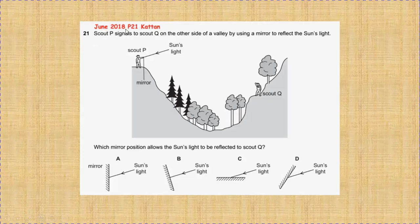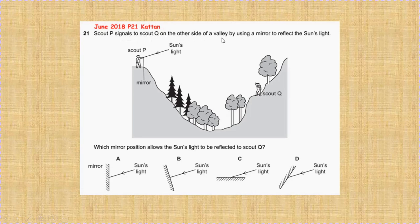Today we have June 2018, paper 21, question 21. Scout P signals to scout Q on the other side of a valley by using a mirror to reflect the sun's light. Which mirror position allows the sun's light to be reflected to scout Q?